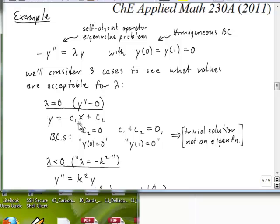If we apply the boundary condition at X equals 0, that says that Y of 0 is equal to 0. Obviously, this term is going to vanish, but now we're left with C2 must be equal to 0, and so that says that we have to get rid of the C2 term.